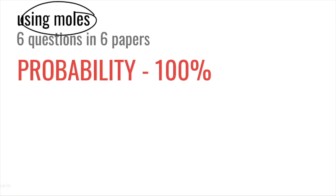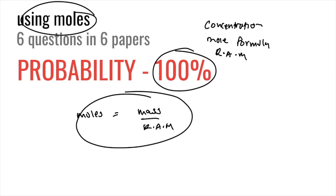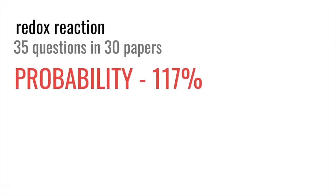Using moles comes in almost 100% of papers — around one question per paper, sometimes two. Questions cover concentrations and the mole formula: moles = mass ÷ RAM, and moles = concentration × volume. You use these formulas to calculate RAM, mass, or concentration values. The probability of it coming is 100%.